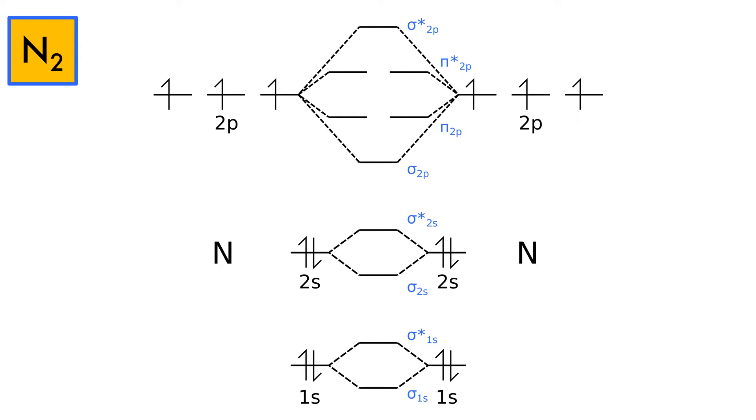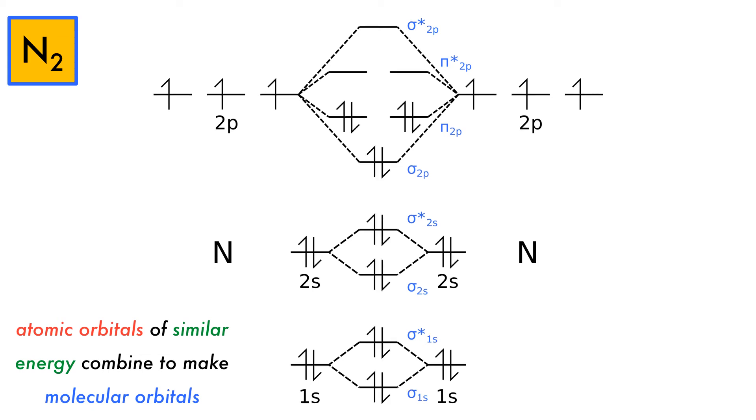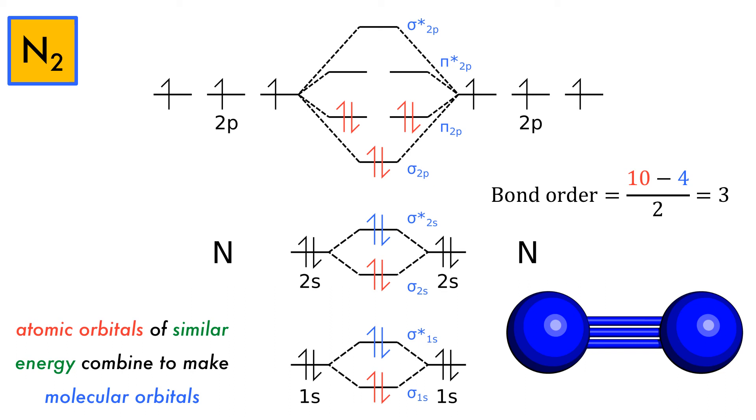If we look at dinitrogen, as before, one atom on each side and the molecular orbitals in the center. Also as before, molecular orbitals are formed between atomic orbitals of similar energy. The molecular orbitals are then filled up from the atomic orbitals starting with the lowest energy. This is then used to calculate the bond order. 10 electrons in bonding orbitals and 4 in anti-bonding give a bond order of 3. This provides a solution to the nitrogen triple bond observed.